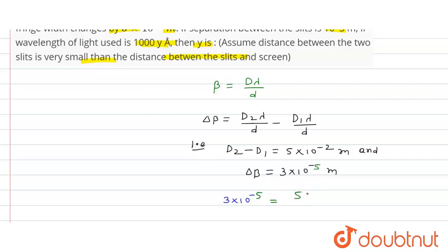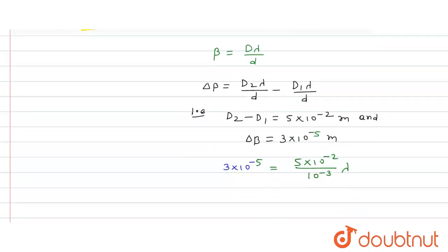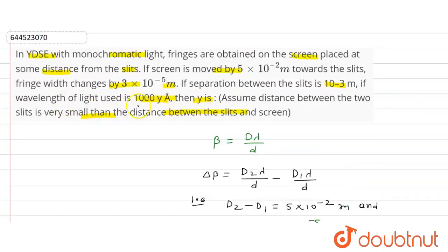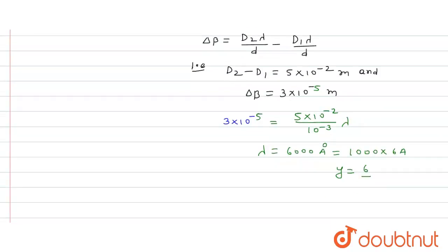Putting in the values: 3×10⁻⁵ = (5×10⁻²) / (10⁻³) × lambda. Solving, lambda equals 6000 angstrom. We can write this as 1000×6 angstrom, so comparing with 1000y angstrom, y is equal to 6.